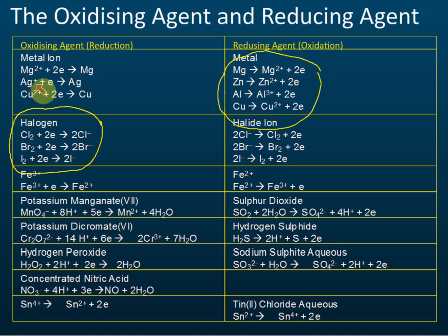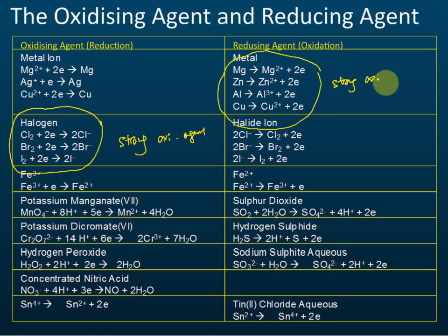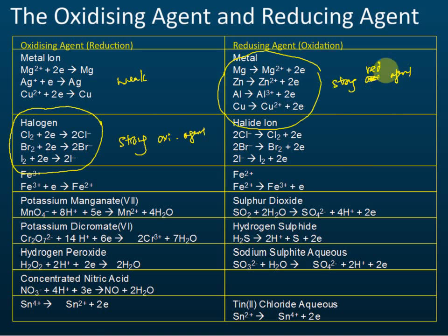So to summarize what's written here: halogens are strong oxidizing agents, halides are weak reducing agents. Metals are strong reducing agents, and metal ions are weak oxidizing agents.